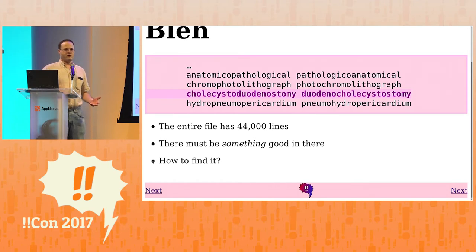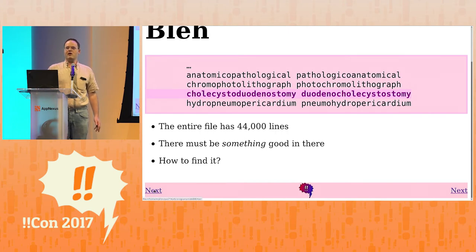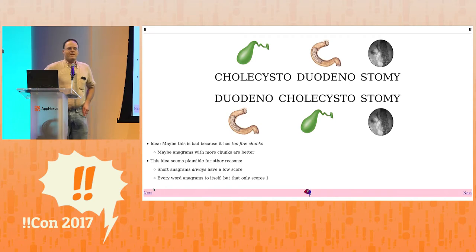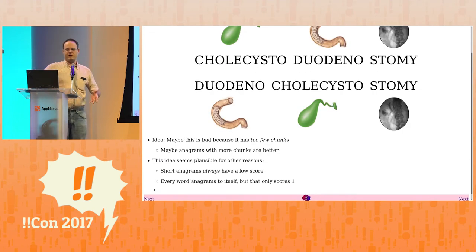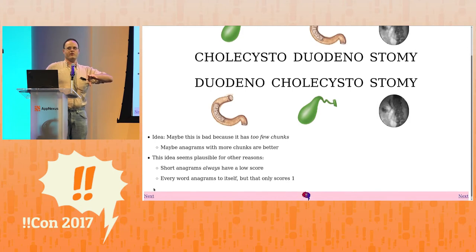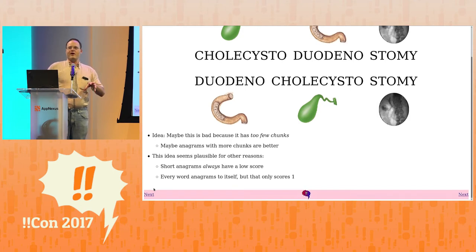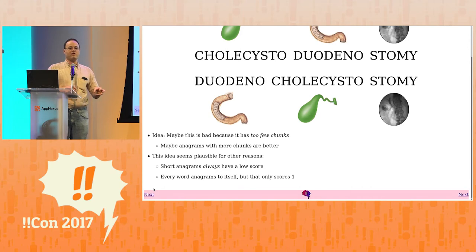There are 44,000 entries in this file. There must be something good in there — how are we going to find it? Cholecystoduodenostomy gave me the idea: it has too few chunks. You chop it into three chunks and switch the gallbladder and the duodenum. Maybe anagrams with more chunks are more complicated. A score is how many chunks you have to cut the word into before you can rearrange it to make the other one. Short words will always have a low score because you can't cut a five-letter word into more than five chunks.